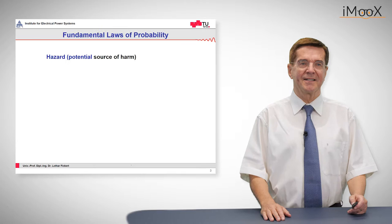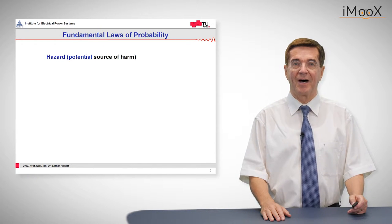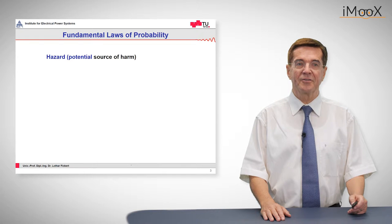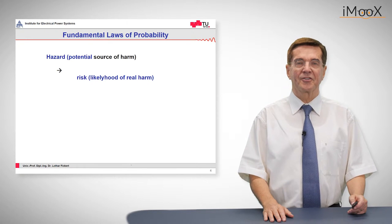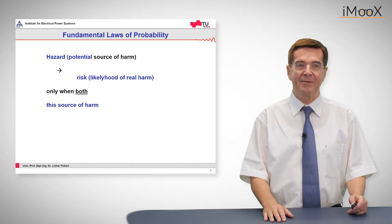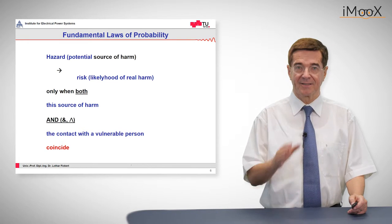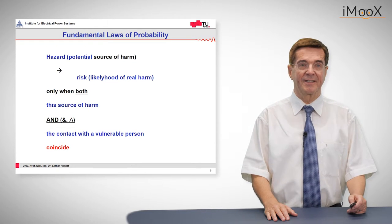A hazard is normally defined as a potential source of harm that can turn into a risk, meaning the likelihood of real harm, if there are two conditions fulfilled. One is that the source of harm exists, and the contact with a vulnerable person coincides.